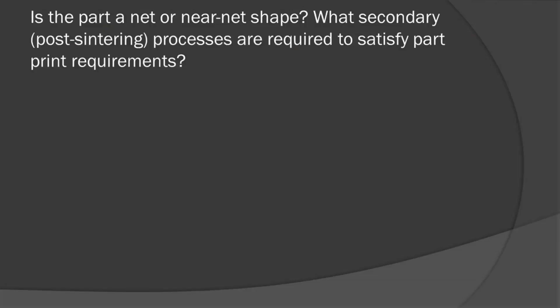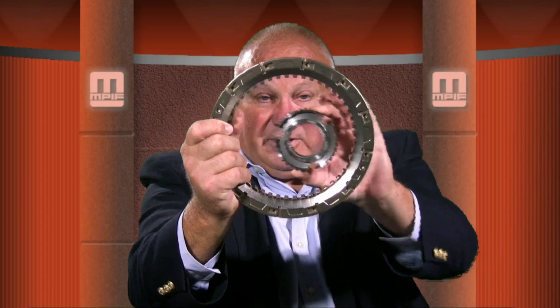Is the part a net or near net shaped component? What secondary or post-sintering processes are required to satisfy part print requirements? In some cases, final part tolerances or geometry cannot be achieved without secondary machining. Although tool control dimensions with tolerances in the thousandths — that's 0.025 millimeters — are held, part thickness, length, and ID/OD tolerances in this range generally require a secondary machining operation. It should be noted that as part size increases, net part tolerances also increase — larger parts require more tolerance than smaller parts.